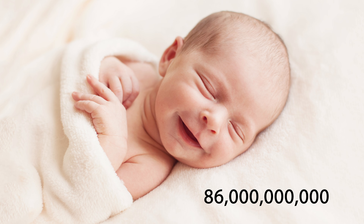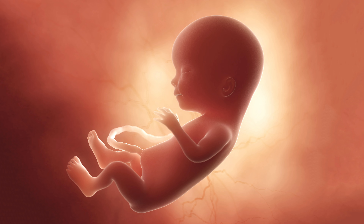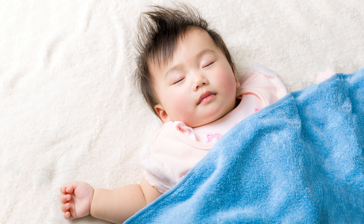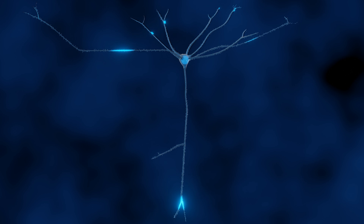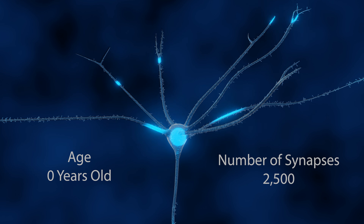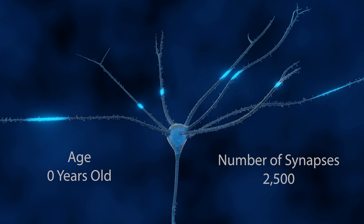At birth, a human is born with around 86 billion neurons. This is notable because before a baby is born it creates an average of 3,500 neurons per second. Once a person is born, the number of neurons does not significantly change over the entire lifespan. However, the number of synapses does change significantly.